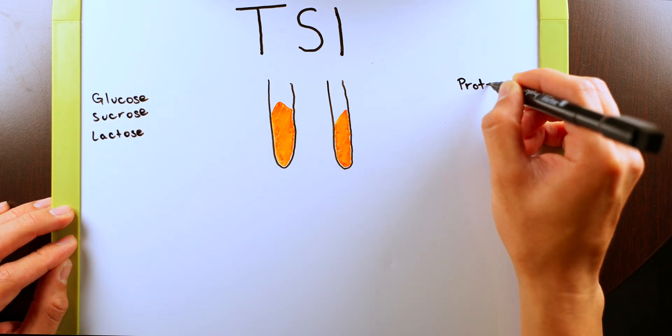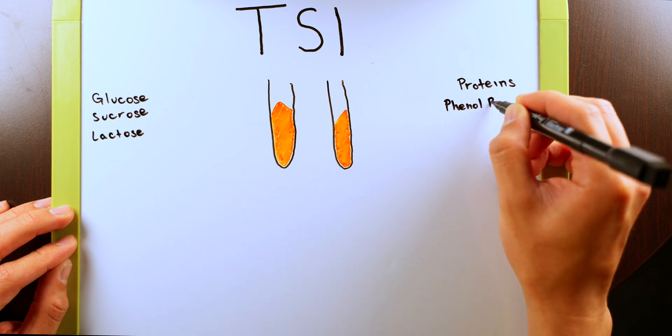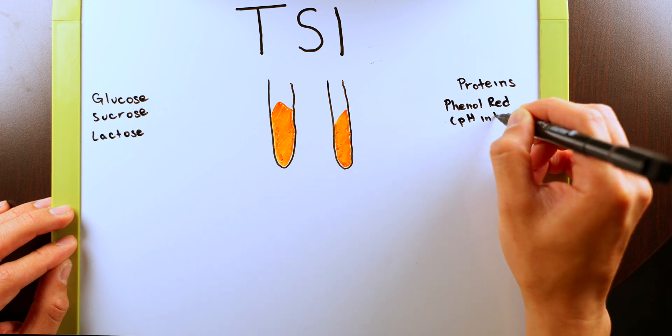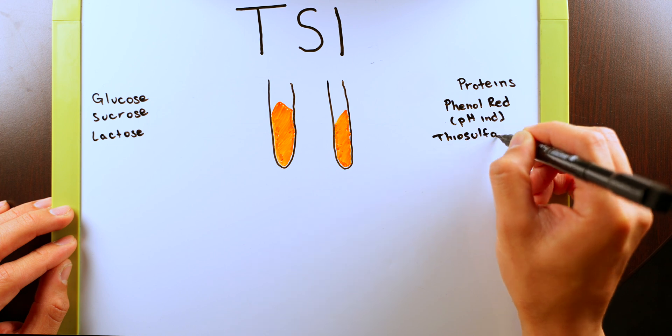We also have a variety of proteins, as well as phenol red, which will act as our pH indicator, and thiolsulfate included in this agar.